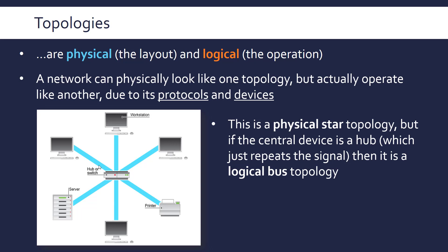A very common example is having a physical star topology but actually operating like a bus topology — so it has a logical bus topology. This is the same star diagram from the beginning. If the central device is a hub, a message will come in and it will send it out to all the other devices. And if all the devices are running a bus protocol like Ethernet, then the whole network will look like a star topology but will behave like a bus topology, because all the messages will come in and get sent out to all the other devices.